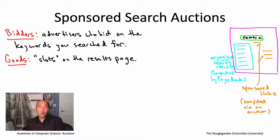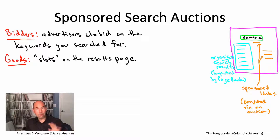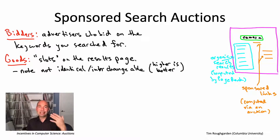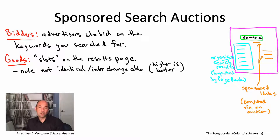Now what are the goods being sold? The goods are basically real estate on one of these search results pages — that corresponds to the orange links in this figure. In this figure there are four of them, so there are four different goods being sold, one for each of the slots on the search results page. We are no longer in the simplified world of single item auctions. In a sponsored search auction, more than one item is being sold. And to make things more complicated, these items are not identical to each other — they're not interchangeable, and bidders will prefer some of them more than others.